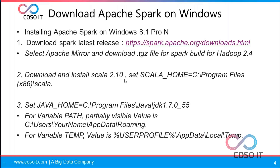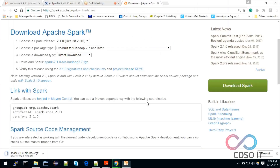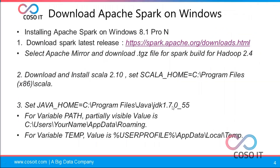Then you have to download and install Scala 2.10 and set the SCALA_HOME variable. You also need to download JDK: use JDK 1.7 if you're using Spark 1.6, or JDK 1.8 if you are using Spark 2.1.